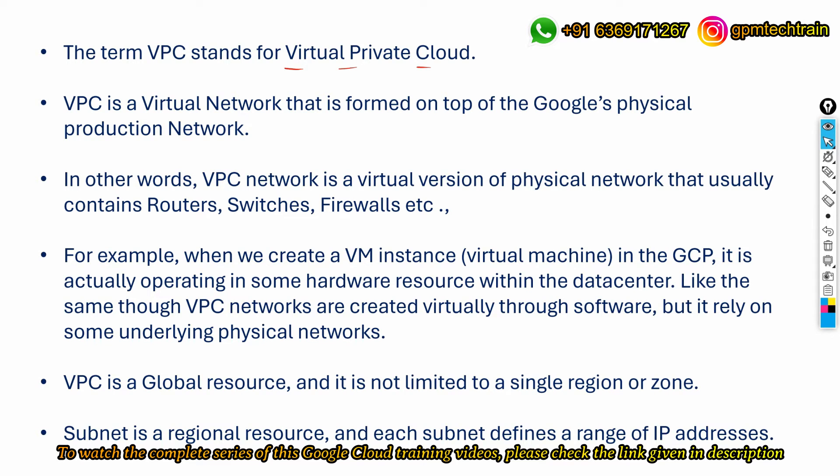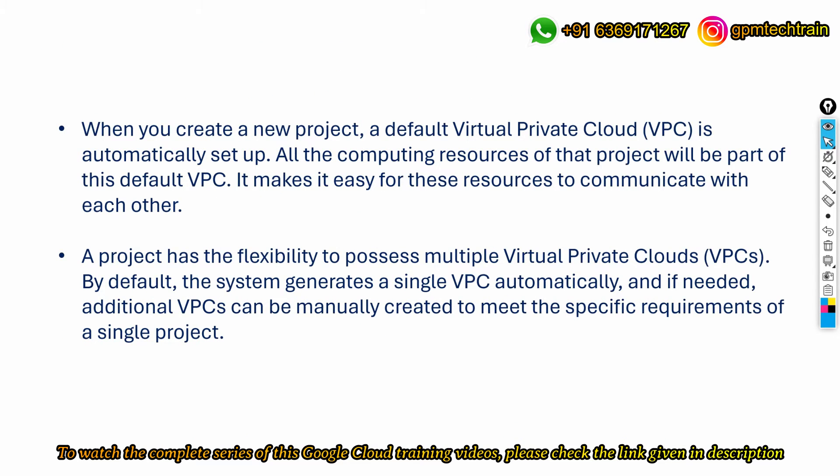A subnet, on the other hand, is a regional resource, and each subnet defines a range of IP addresses. We will be discussing this in detail in upcoming videos. When you create a new project, a default virtual private cloud is automatically set up, and all the computing resources of that project will be part of this default VPC.